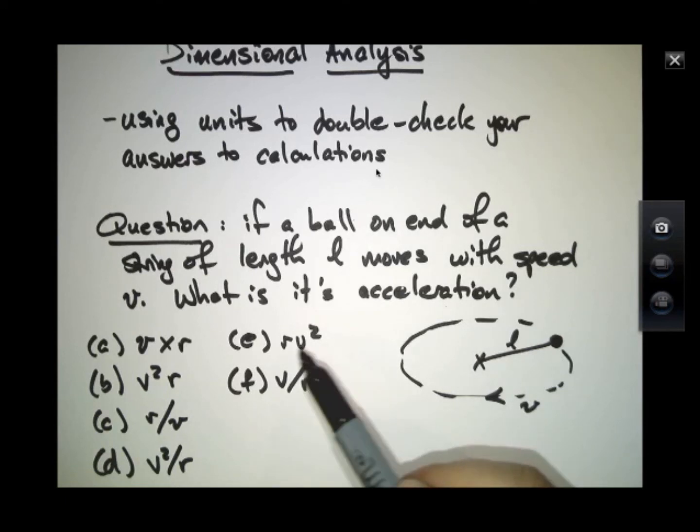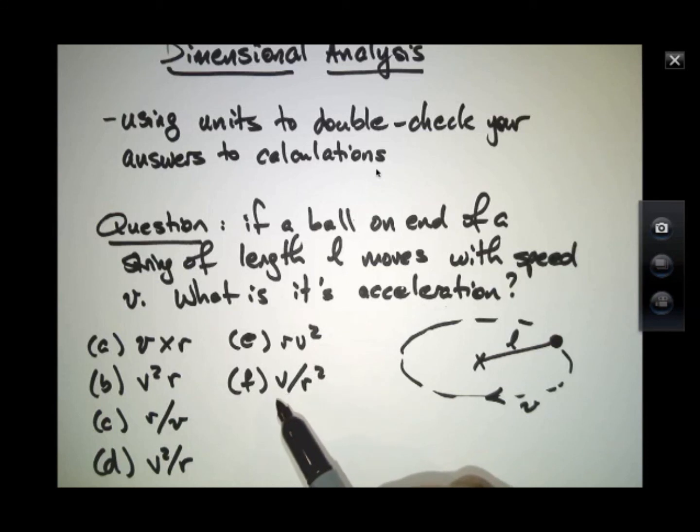Answer E becomes length times length squared over time squared, so that's the same as answer B. And answer F is length over time divided by length squared, so it becomes one over length times time and that's not correct.